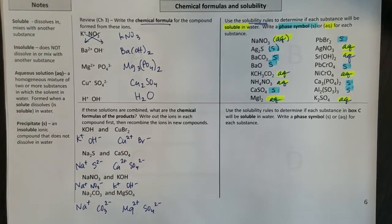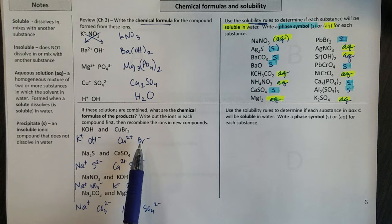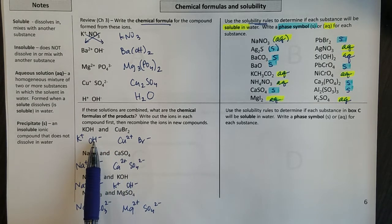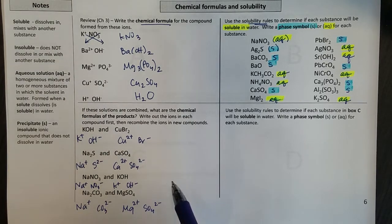And those would be all the ions present. I'm thinking a double displacement reaction where I combine two different solutions together. So now I want to do a double displacement reaction, which means that potassium is going to go bond with bromide and copper is going to go bond with hydroxide. So here's what that would look like.